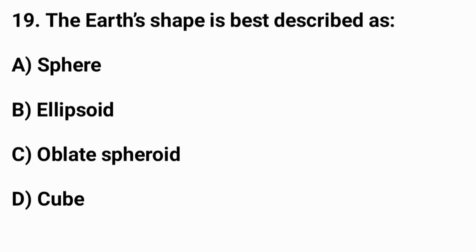Question number nineteen: The Earth's shape is best described as? The right answer is option C — oblate spheroid.